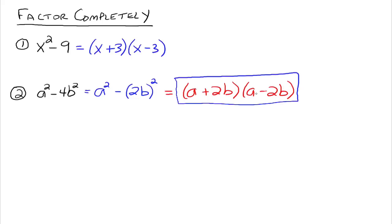One other thing to point out: we've been writing this as a plus 2b times a minus 2b, but it could just as easily be written as a minus 2b times a plus 2b — that's the same thing. This first example could also be written as x minus 3 times x plus 3. It doesn't really matter if you put x minus 3 first or x plus 3 first. What matters is that you've got those two factors. The order doesn't matter.